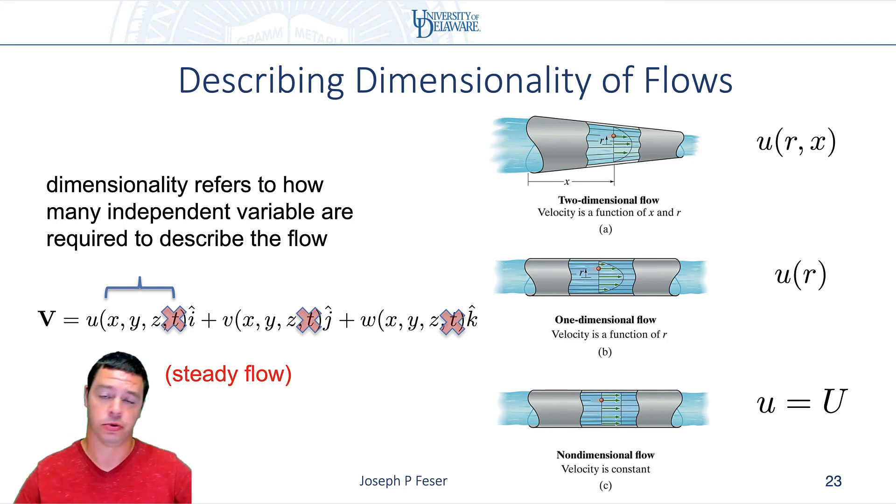So at least far away from an aircraft or within a pipe, you might have a situation where from point to point the velocity is basically the same everywhere.